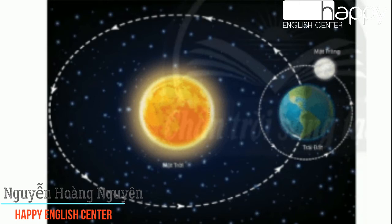Do you know why there are different seasons? Because the Northern Hemisphere and Southern Hemisphere lean towards the sun at different times. The hemisphere that leans more towards the sun will experience a warmer season.